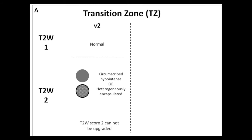So what exactly changed? We'll focus on some of the most important, starting with the TZ or transition zone. As a reminder, the T2-weighted images are the primary sequence for scoring in the TZ, and the score is from 1 to 5. In version 2, a score of 1 corresponded to a completely normal gland, which is very rare. A score of 2 was assigned when there were typical BPH changes — specifically, nodules that were either circumscribed T2 hypo-intense lesions in the TZ, or a heterogeneous nodule that was completely encapsulated.